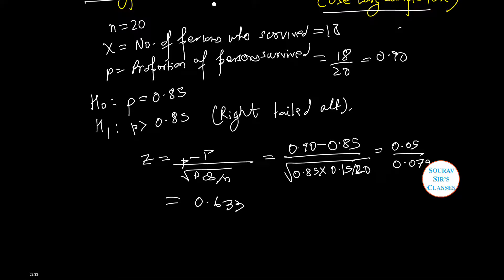Thus, the conclusion is that since the alternative hypothesis is one-sided right-tailed, we shall apply right-tailed test for testing significance of z. The significant value of z at 5% level of significance is plus 1.645.